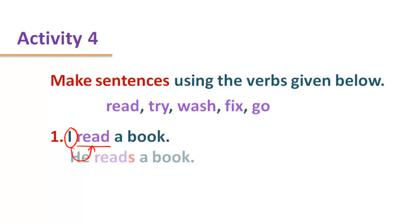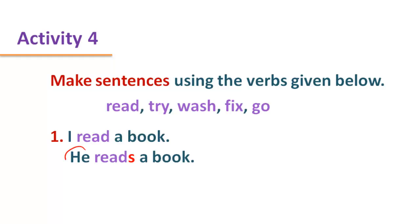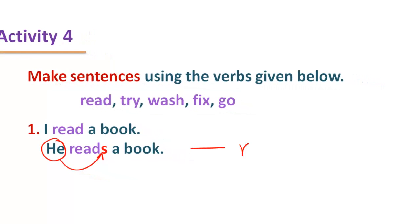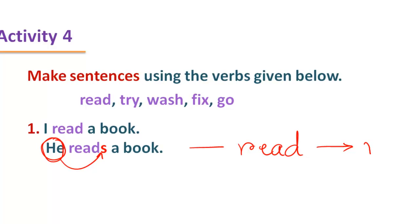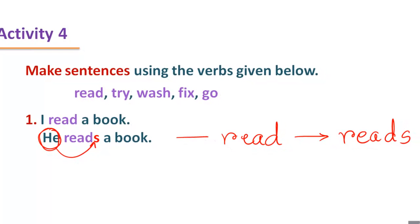But we have to be careful. If the subject is like 'he' or 'she' or any other singular subject in the third person, then we have to add S, ES, or IES with the main verb in the present tense form. Here the subject is 'he', third person singular. It requires a verb in the present tense with S, ES, or IES at the end. The base form is 'read', but with third person singular it becomes 'reads'. He reads a book.